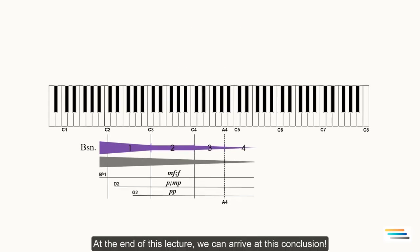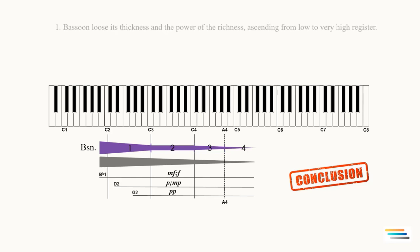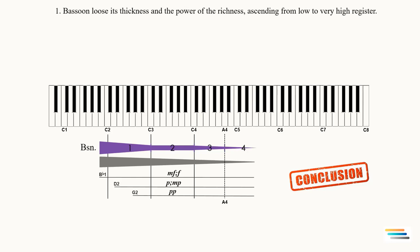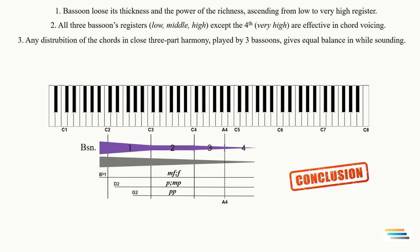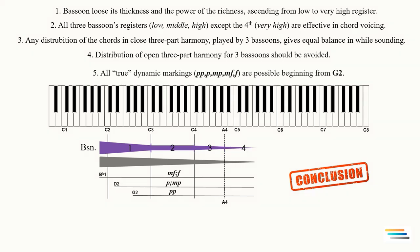At the end of this lecture, we can arrive at this conclusion: Bassoon loses its thickness and the power of the richness ascending from low to very high register. All three bassoons registers - low, middle, high - except the 4 which is very high are effective in chord voicing. Any distribution of the chords in close three part harmony played by three bassoons give equal balance and wise sounding. Distribution of open three part harmony for three bassoons should be avoided. All dynamic markings - pianissimo, piano, mezzo piano, mezzo forte, forte - are possible beginning from G2.